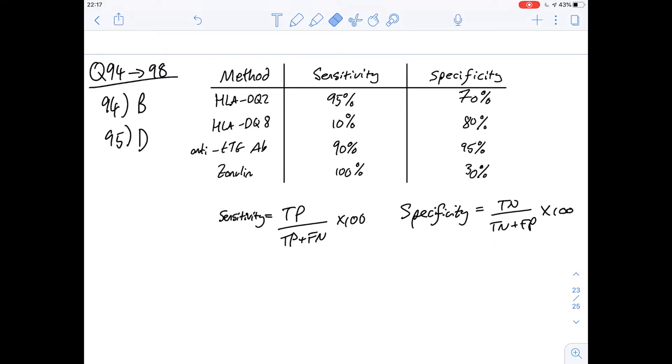Now 96 is a little bit more complicated it says of the following which two methods produce the most false negatives and false positives respectively. So again we can just have a look at these. So false negatives are part of the definition of sensitivity so the more false negatives you have the lower the sensitivity. Similarly for specificity the more false positives you have the lower the specificity.